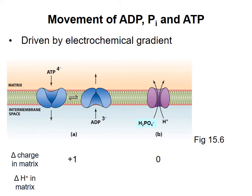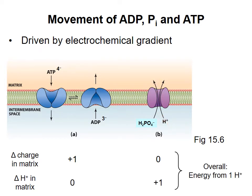The other component that contributes to the electrochemical gradient is the proton concentration differential. During exchange of ATP and ADP, no protons are moved across the membrane, so the pH difference across the membrane is unaffected. However, transport of phosphate is driven by the proton moving from an area of high concentration to an area of low concentration, which is an energetically favorable process. So of these two processes, only movement of phosphate uses energy from the proton concentration difference part of the electrochemical gradient.